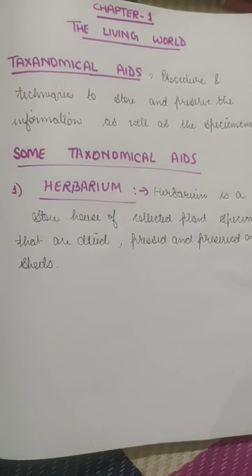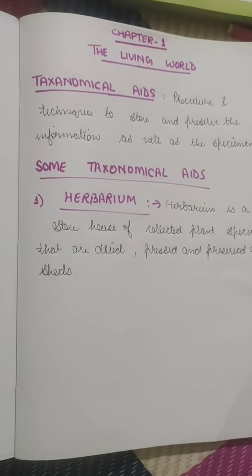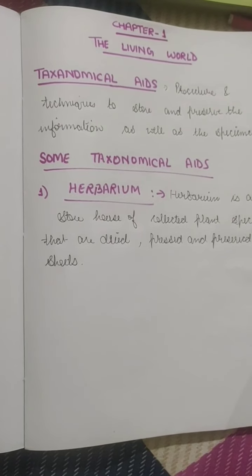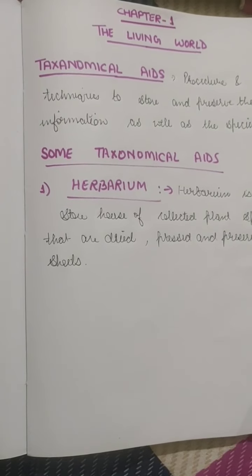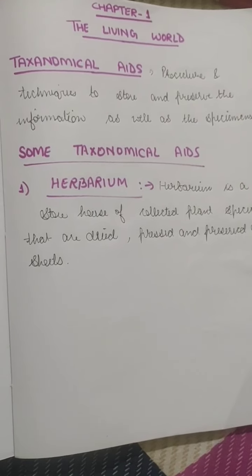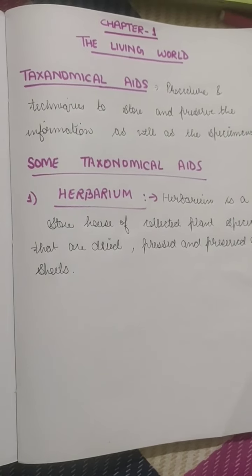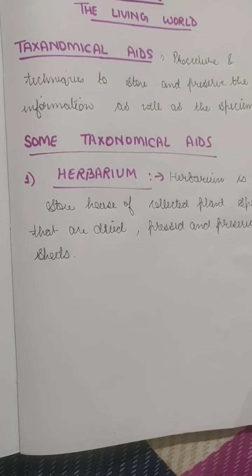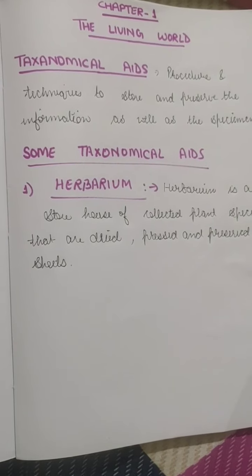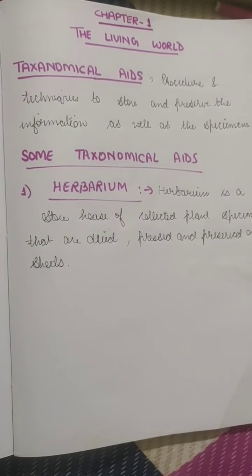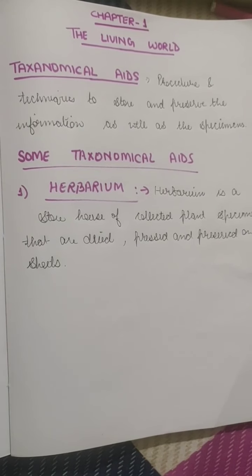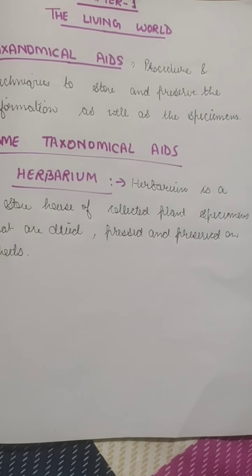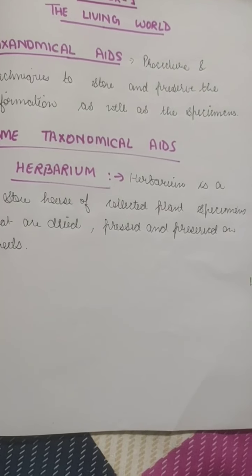Herbarium also helps us with quick reference — it is like a dictionary. We have specific files of herbarium where all plants with similar qualities and properties are kept in a selected file. This makes it very easy to identify newly discovered plants by taking reference, which helps scientists and biologists who study new plants every single day for agriculture and research.